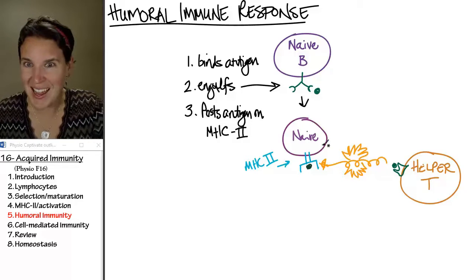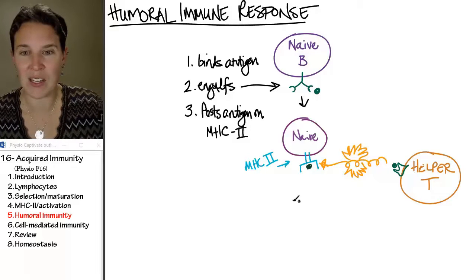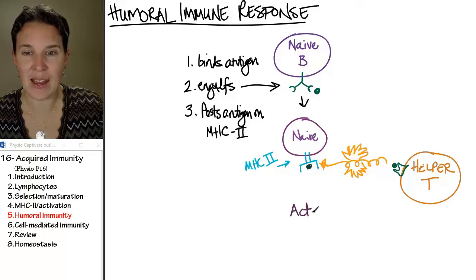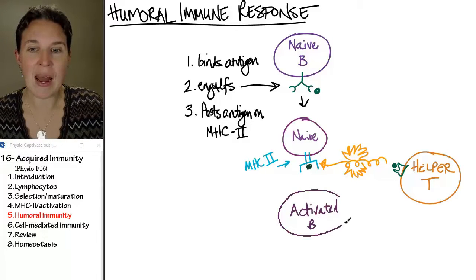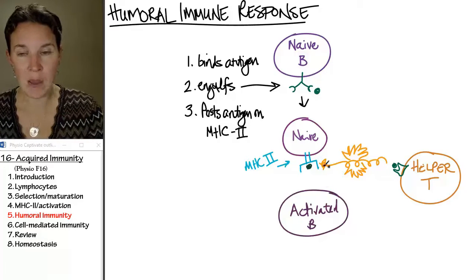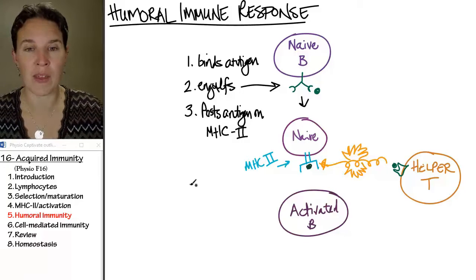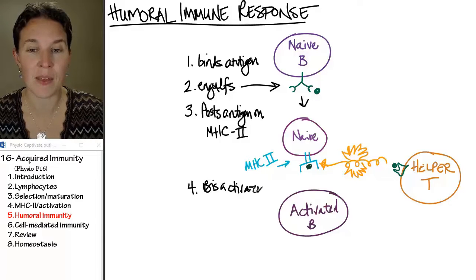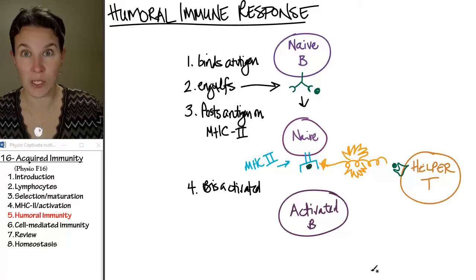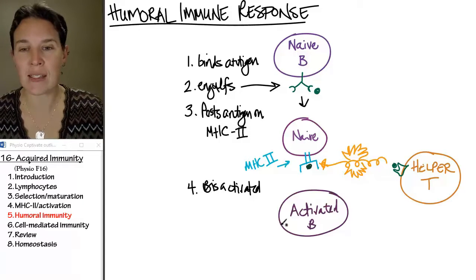The helper T comes in and activates this cell. Now we have an activated B. Thank you, helper T. My activated B has choices.